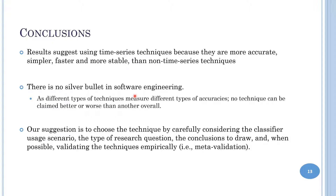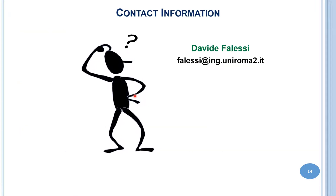However, there is no silver bullet in software engineering. Different types of techniques measure different types of accuracy, so no technique can be claimed better or worse than another overall. Our suggestion is to choose the technique by carefully considering the classifier user scenario, the type of research question, the conclusions to draw, and when possible validating the technique. Thank you very much for your time — if you have questions, please read the entire paper and send me an email.